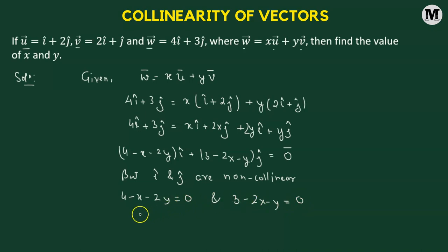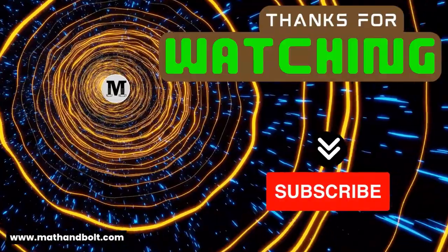Now we can solve these two equations to get the value of x and y. So x is going to be equals to 2 over 3 and y is going to be equals to 5 over 3. This is going to be the value of x and y.